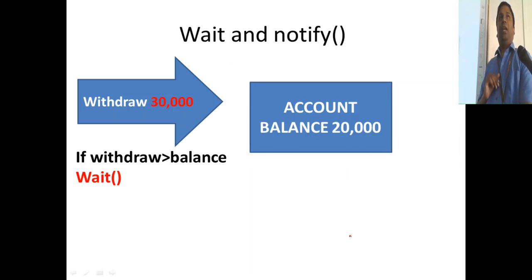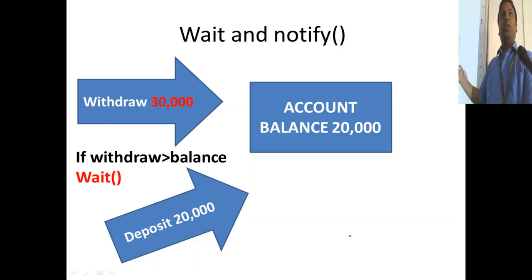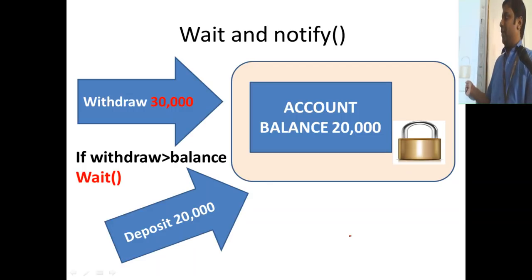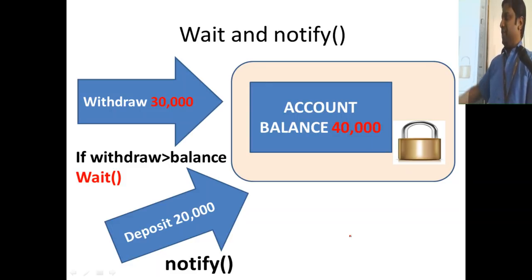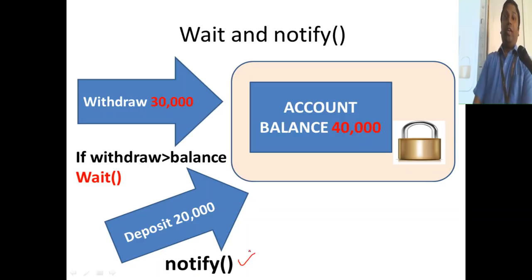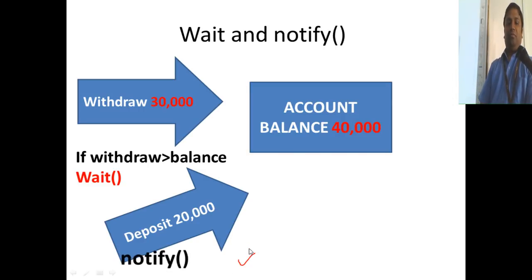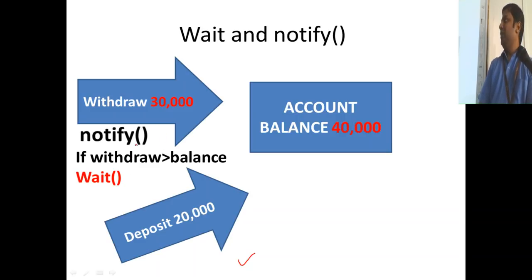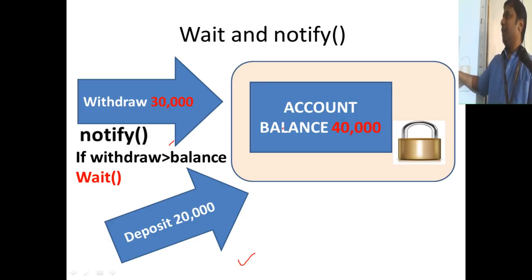Now there's another thread — a deposit thread. It acquires the lock and updates the amount to 40,000. Once the deposit is done, it calls notify(). Notify triggers the waiting thread. It also releases the lock on the account object. The waiting thread wakes up from the wait state, acquires the lock, and tries withdrawing 30,000. It checks: is withdraw greater than balance? No — so it goes and withdraws.